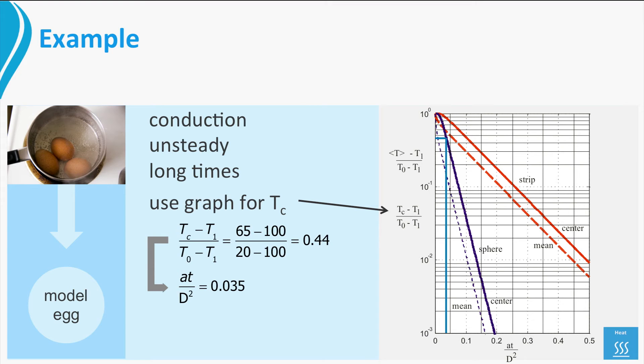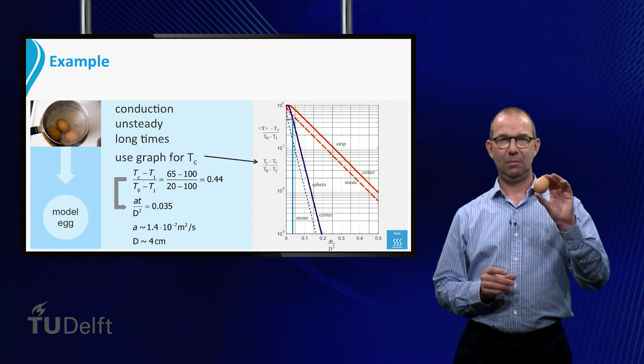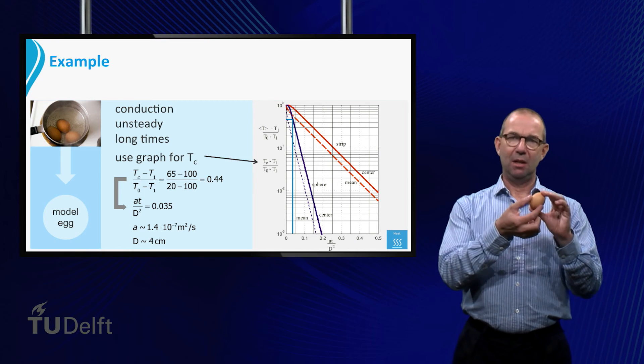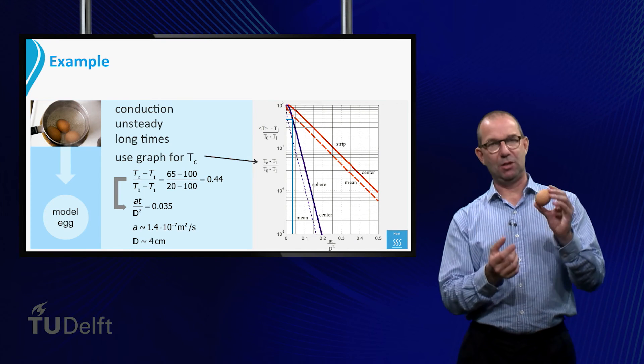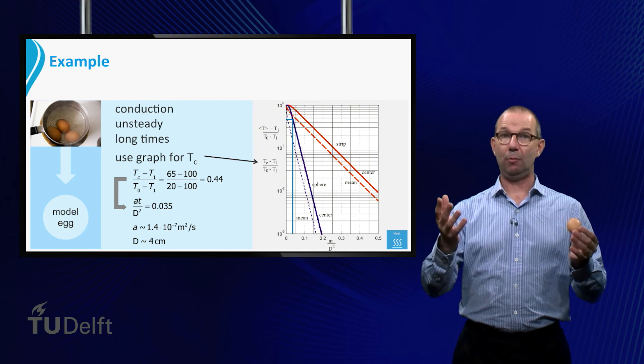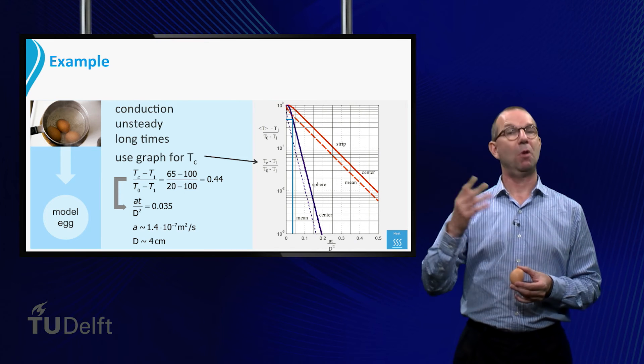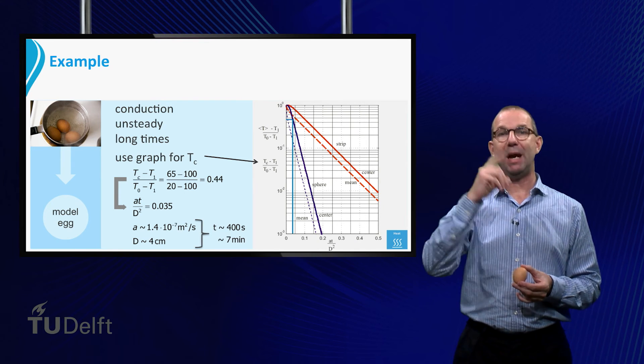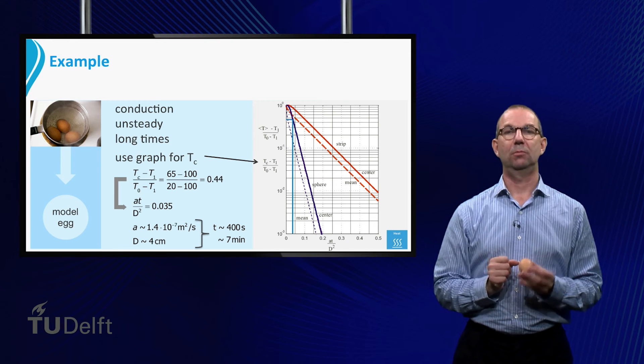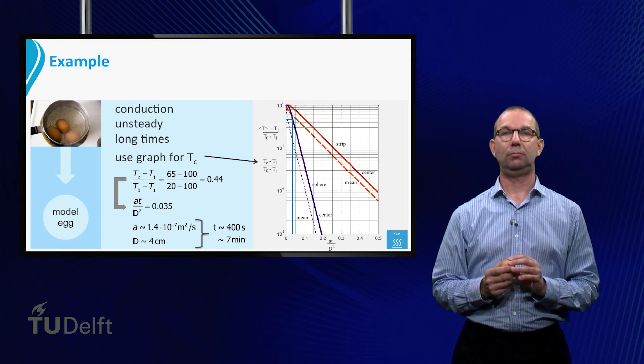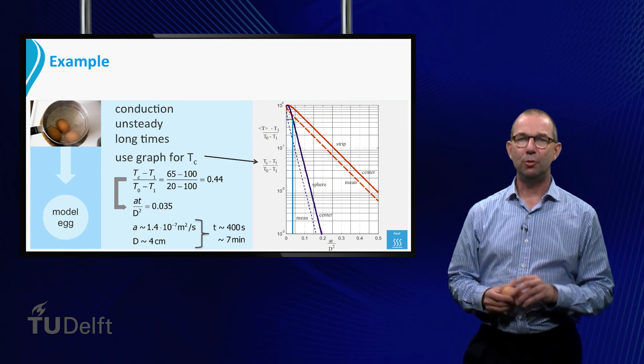Next we estimate A, the heat diffusivity. For egg, that value is about 1.4×10 to the minus 7. We also have to estimate the size of the egg. It will be roughly 4 cm in diameter. From that we can compute the time needed, which is 7 minutes. Not bad at all, ask your mother or try it yourself.